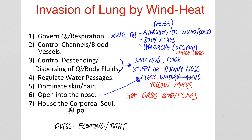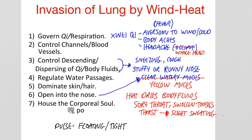Heat dries up the body fluids, giving sore throat, swollen tonsils, and thirst, and the heat leads to slight sweating. The pulse is still floating for the wind but becomes rapid instead of tight, and the tongue can become red on the sides and the tip.